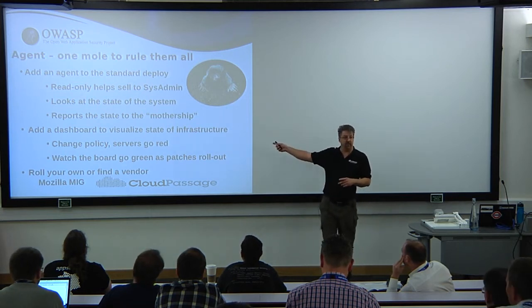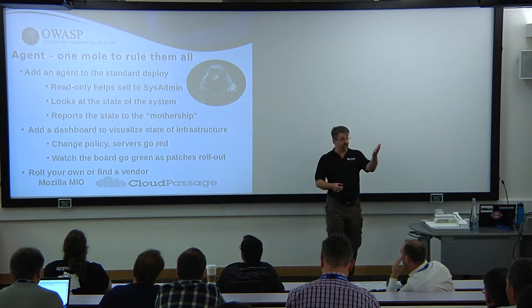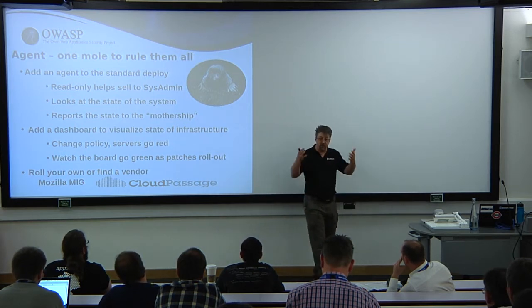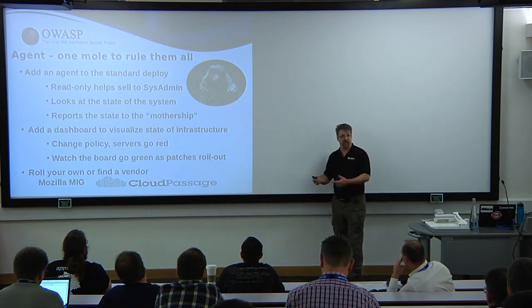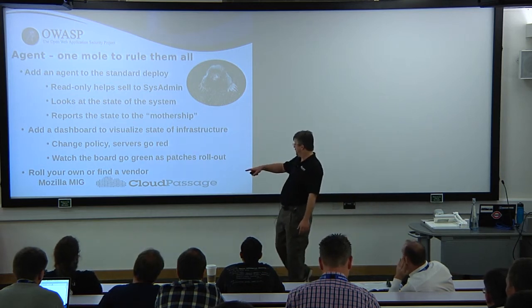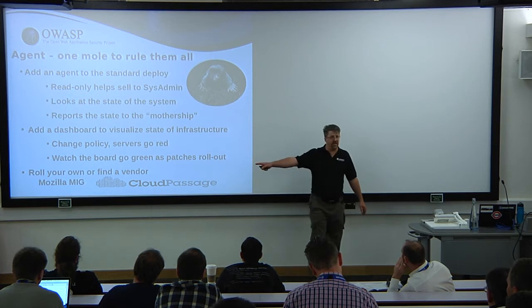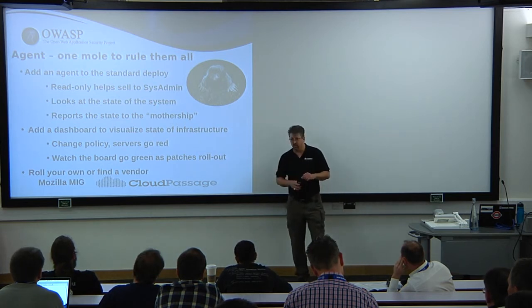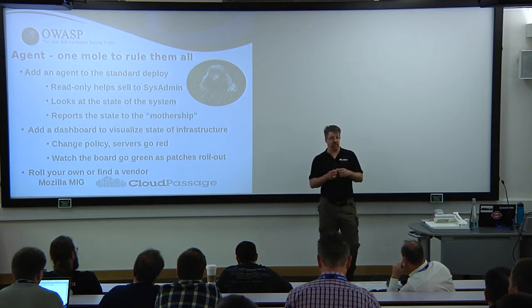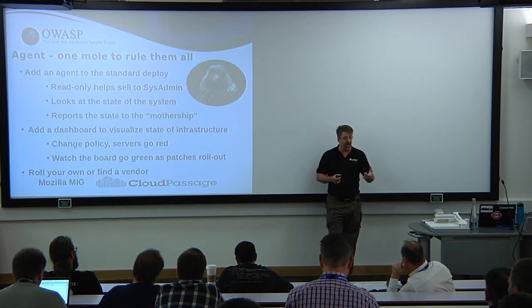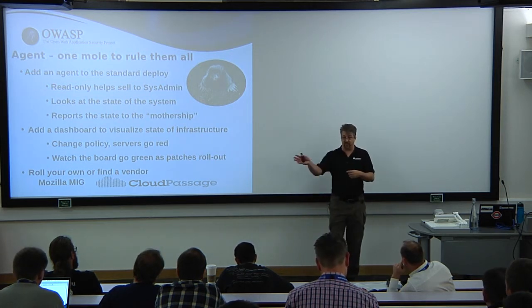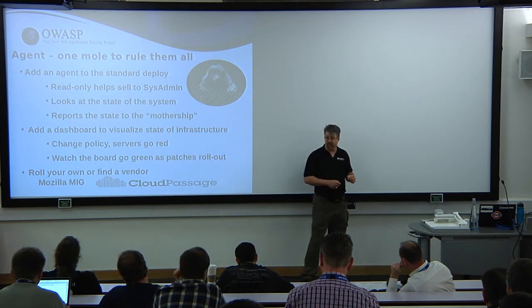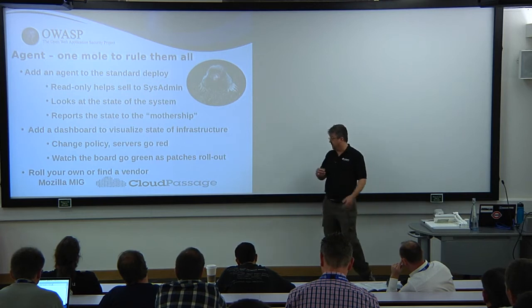Ideally, add a quick and dirty dashboard to show these things. For the Jenkins thing, we could have turned everybody that had Jenkins red, and then as Jenkins got updated, turn them green — get a quick visual representation of how much work we have to do. You can roll your own, or there's Mozilla MIG, which is actually more forensically based but you could easily tweak it. That's a Mozilla security project, open source written in Go. Their idea is to use the agent to find signs of compromise — you give it a hash of a problematic binary and ask if it exists on the system. Cloud Passage is another vendor that has a nice agent-based system for these kinds of things.